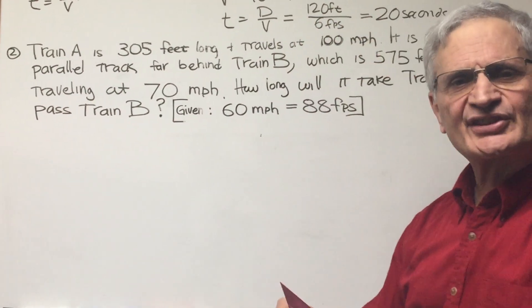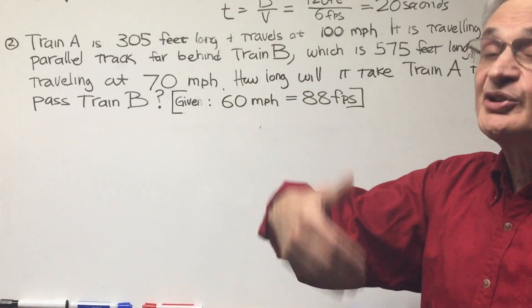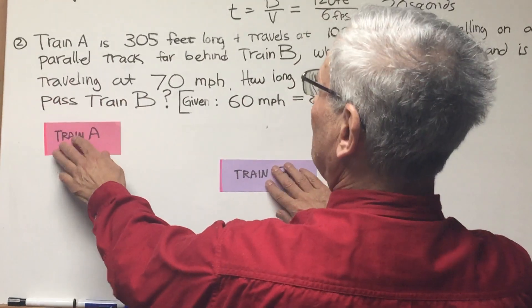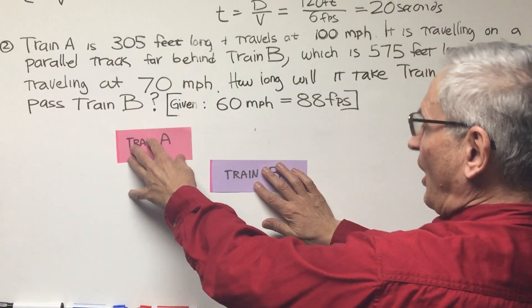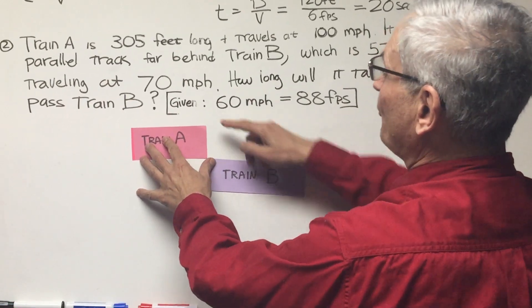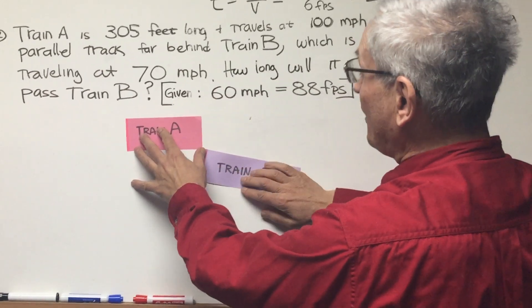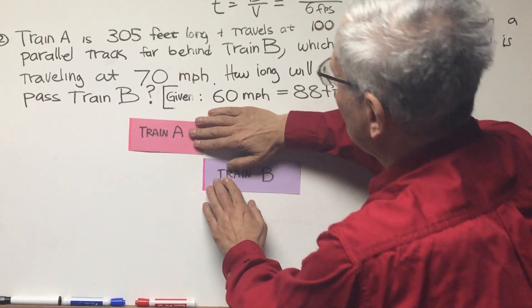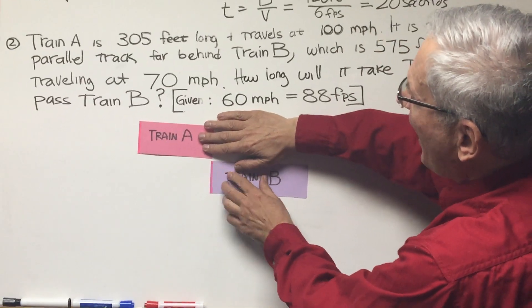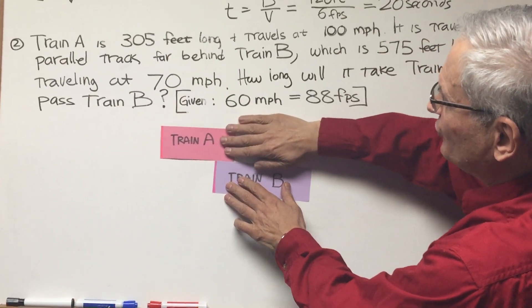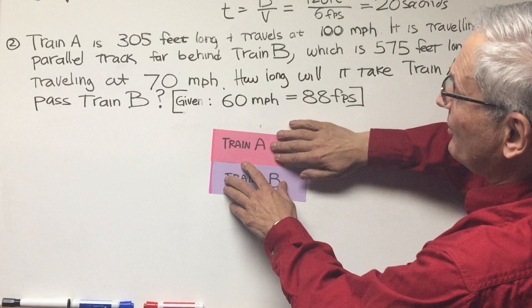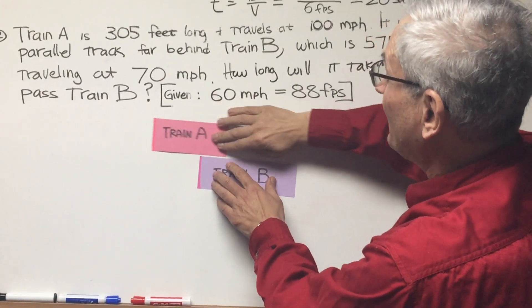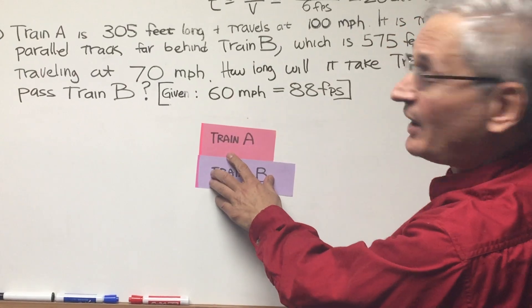Before we do this problem, let me say a few words about what it means for one train to pass another. Here we have train A and train B traveling along the same track. Train A is coming up from behind. The moment the front of train A meets the back of train B, that begins the passing process. How far does train A have to travel so that the back of train A and the back of train B are totally lined up? It's equal to the length of train A.